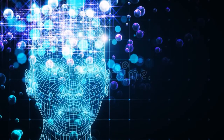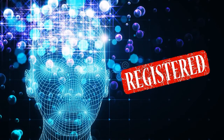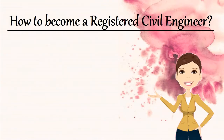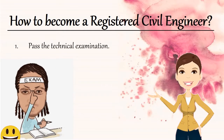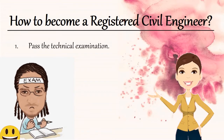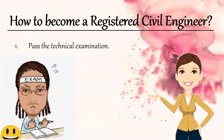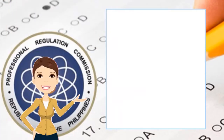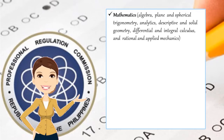To be able to practice the profession, one should be duly registered with the Board of Civil Engineers. So how do you become a registered civil engineer? First, you have to pass the technical examination. Every twice a year, the Professional Regulation Commission, through the Board of Examiners for Civil Engineers, administers the licensure examination. For those who are planning to take the board examination in the near future, make sure that you are able to take all the subjects: Mathematics, including algebra, plane and spherical trigonometry, analytics, descriptive and solid geometry, differential and integral calculus, and rational and applied mechanics. Hydraulics.